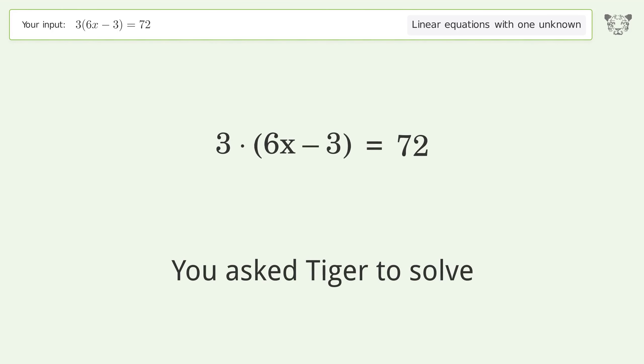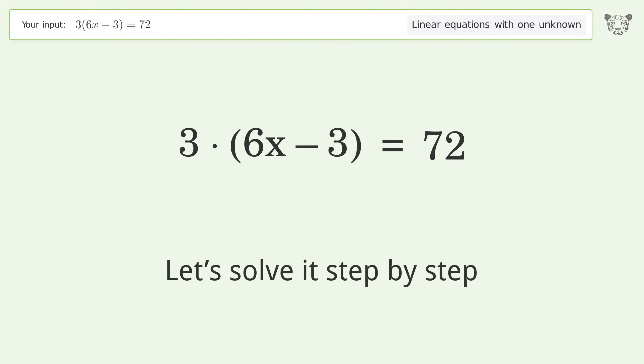You asked Tiger to solve this. This deals with linear equations with one unknown. The final result is x equals 9 over 2. Let's solve it step by step.